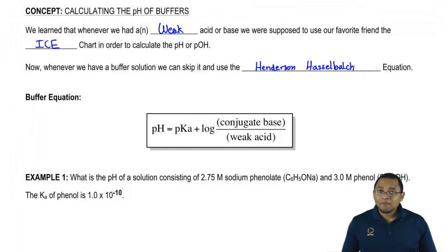It's also known as the buffer equation. It says that pH equals pKa plus the log of conjugate base over weak acid.